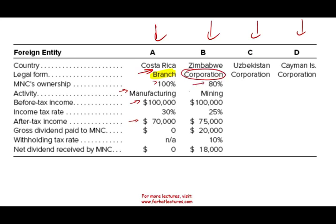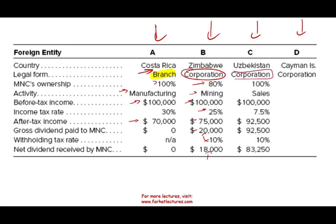The multinational owns 80% of the Zimbabwean subsidiary, which makes it a controlled foreign corporation. They're in the mining business. Their pre-tax income is $100,000. Their tax rate is 25%, so after-tax income is $75,000. They paid a dividend to the US company of $20,000. The withholding rate is 10%, so the net dividend received by the multinational is $18,000 — because 10% of $20,000 is $2,000, leaving $18,000.